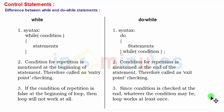Here in case of do-while statement, since the condition checking is done at the end, whatever the condition may be, the loop works at least once. So these are the three major differences between while and do-while.